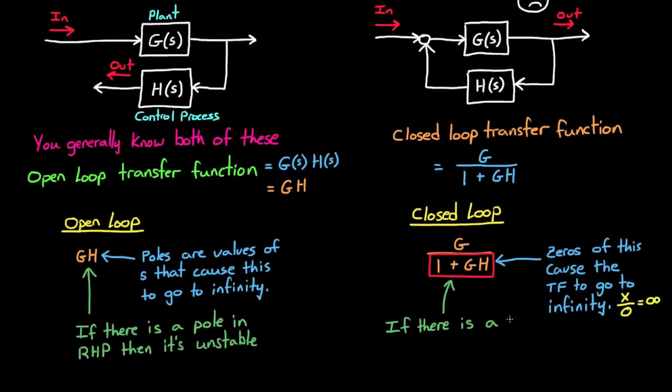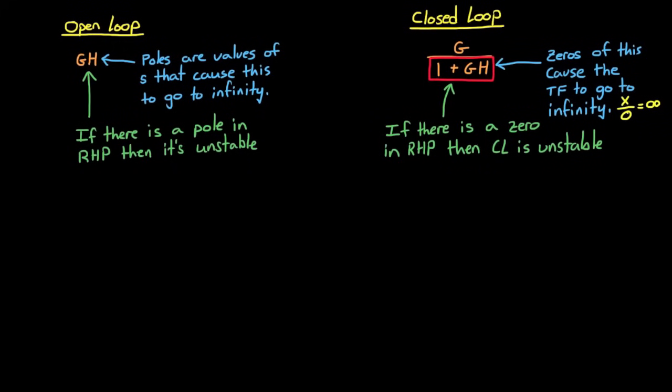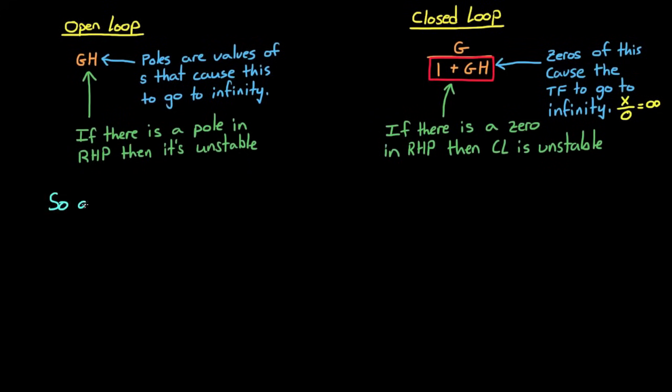This might get a little confusing because I might accidentally say we need to check for closed-loop stability by looking at the location of the zeros, but what I really mean is just the locations of the zeros of 1 plus GH. So just keep that in mind as we move forward.